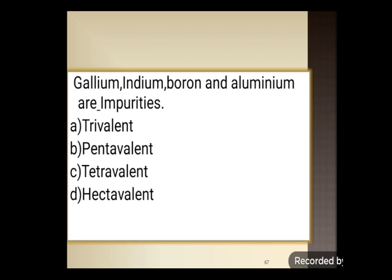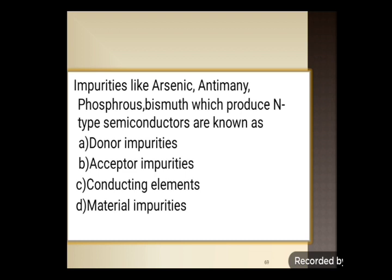Gallium, indium, boron, and aluminium are dash impurities. Options: trivalent, pentavalent, tetravalent, or hexavalent. The correct answer is trivalent — gallium, indium, boron, and aluminium have valency 3. Next: impurities like arsenic, antimony, phosphorus, bismuth, which produce N-type semiconductors, are known as — donor impurities, acceptor impurities, conducting elements, or material impurities. The correct answer is donor impurities, option A.